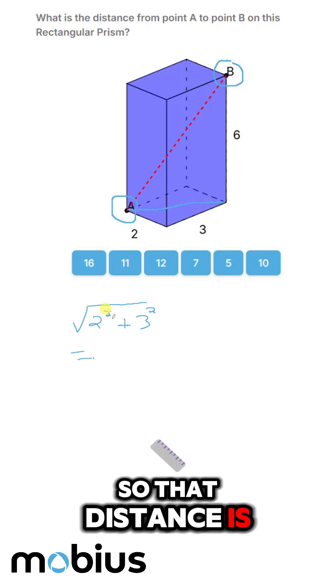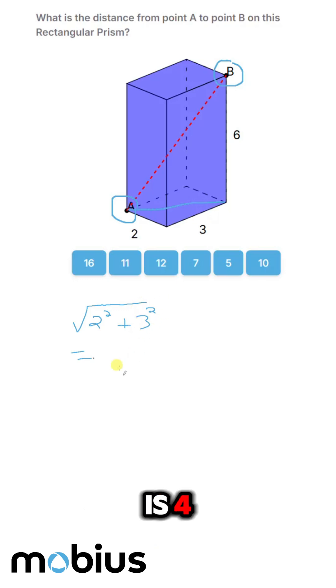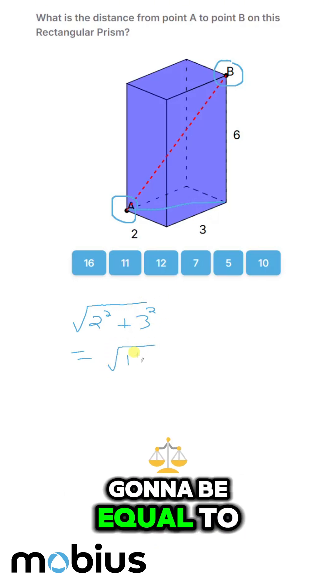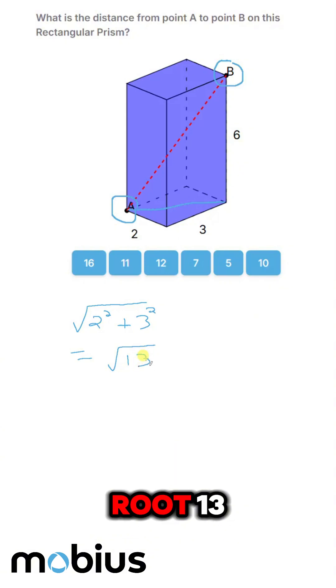So that distance is equal to 2 squared is 4, 3 squared is 9, so that distance is going to be equal to root 13.